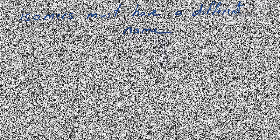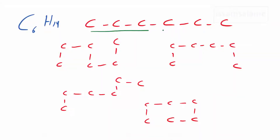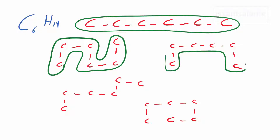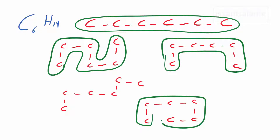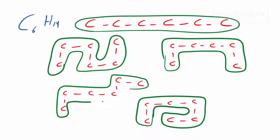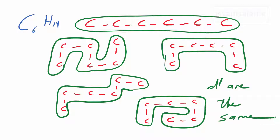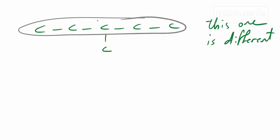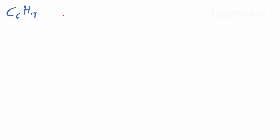Now let's start with C6H14. As you can see, some of these structures are the same — if I try to choose the longest chain, all of them have six carbon atoms in sequence, so those structures are the same. But this one is different because here we have five carbon atoms in sequence and one carbon is outside of the sequence.